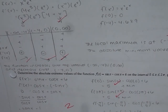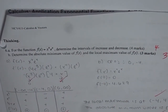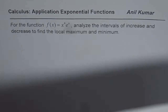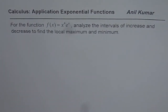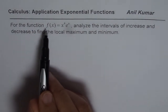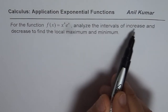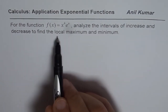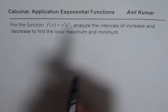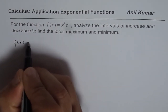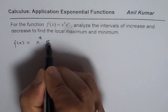I already have a solution for that question, so we will solve question number 6 in this particular video and I will provide a link for the solution of the second one. Let us now look into the question on intervals of increasing and decreasing. The function is f(x) = x⁴eˣ — analyze the intervals of increase and decrease to find local maximum and minimum.